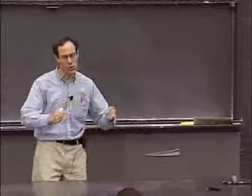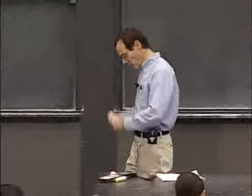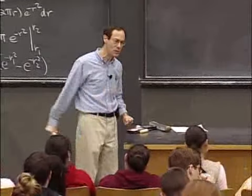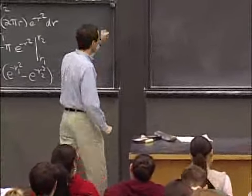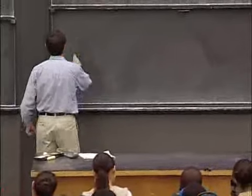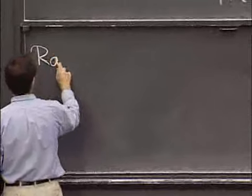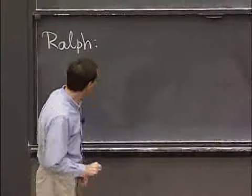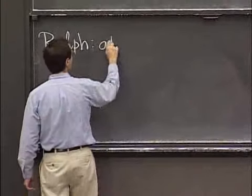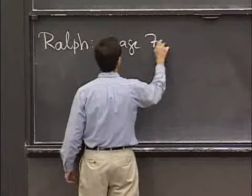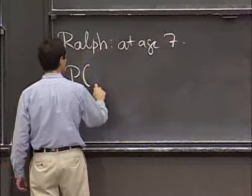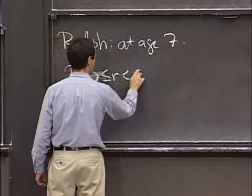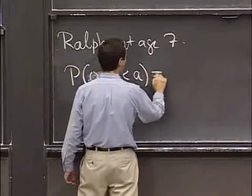You know, when I was three years old, and my brother's friend Ralph was seven, I watched him throwing darts a lot. And I would say that for Ralph, at age seven anyway, later on he got a little better at it. But Ralph, at age seven, the probability that he hit the target was about a half.